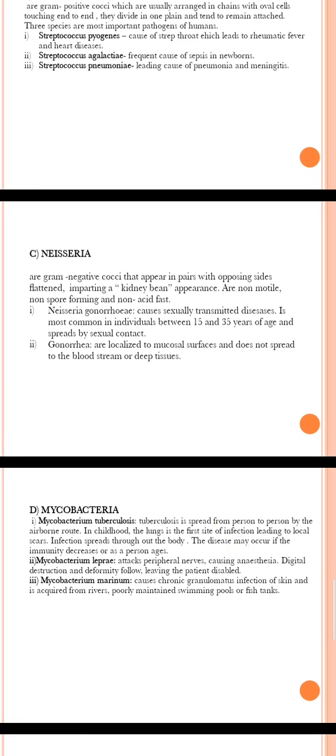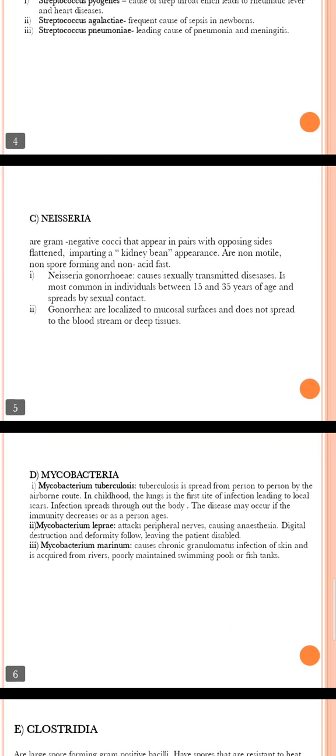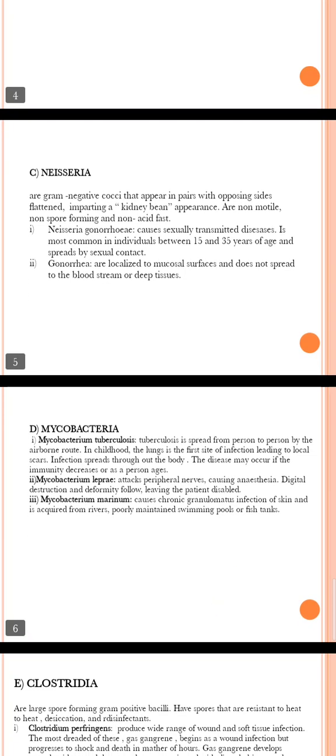The third bacteria is Neisseria. They are gram-negative cocci that appear in pairs with opposite sides flattened, imparting a kidney bean appearance. They are non-motile, non-spore forming, and non-acid fast. Neisseria gonorrhoeae causes sexually transmitted disease, most common in individuals between 15 and 35 years of age and spreads by sexual contact. Gonorrhea is localized to mucosal surfaces and does not spread to the bloodstream or deep tissues.